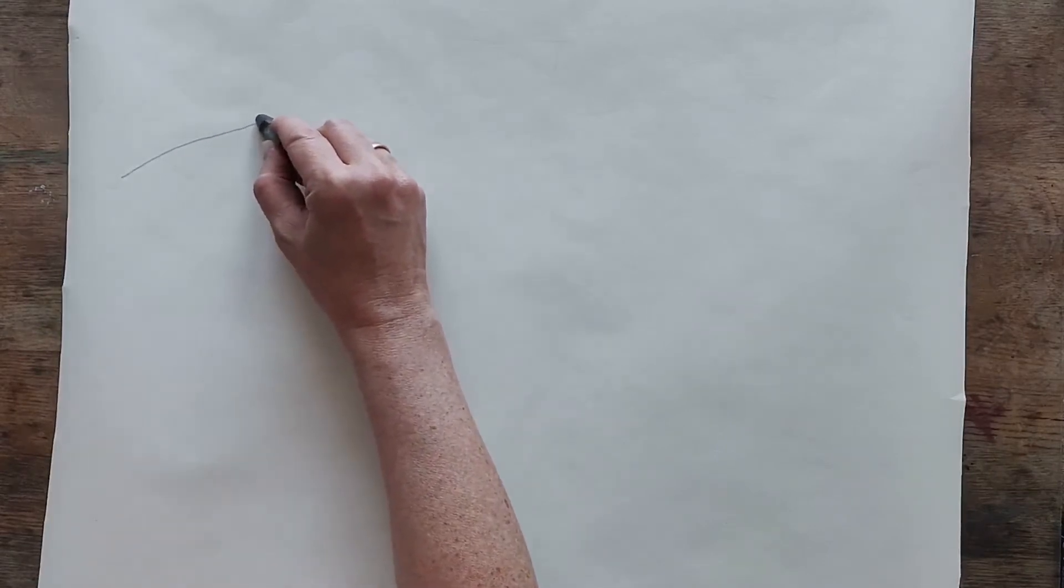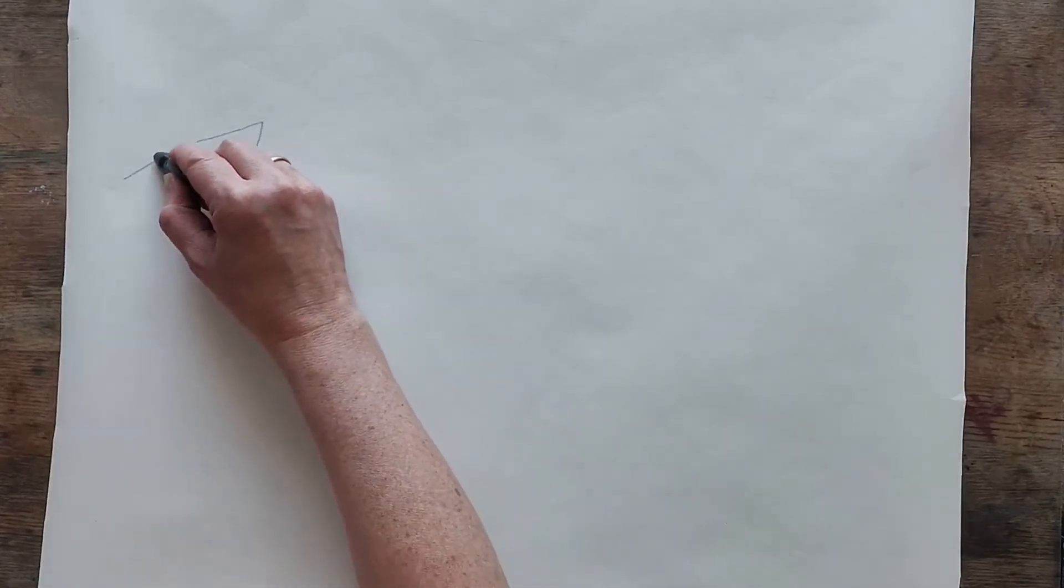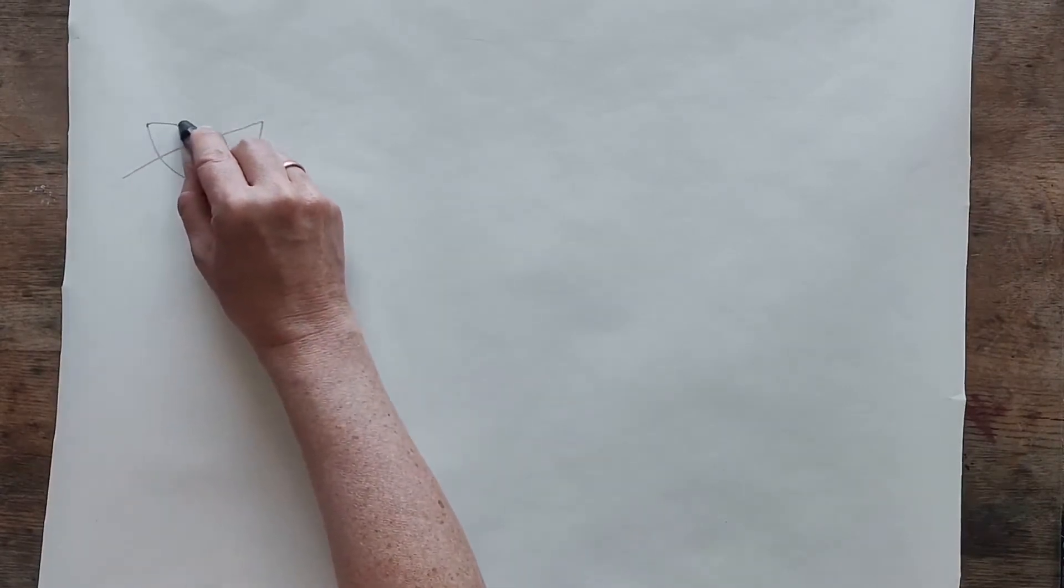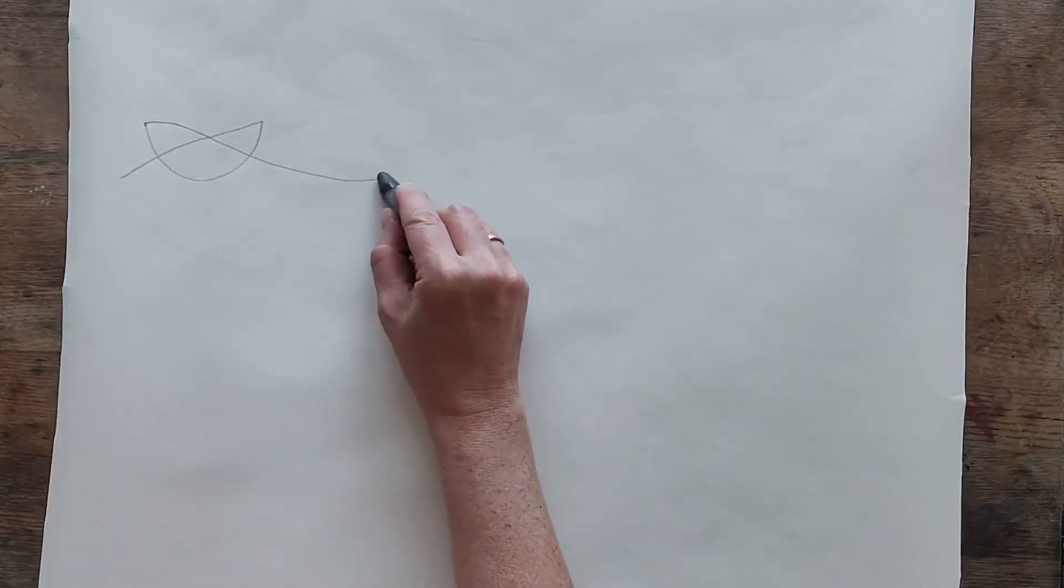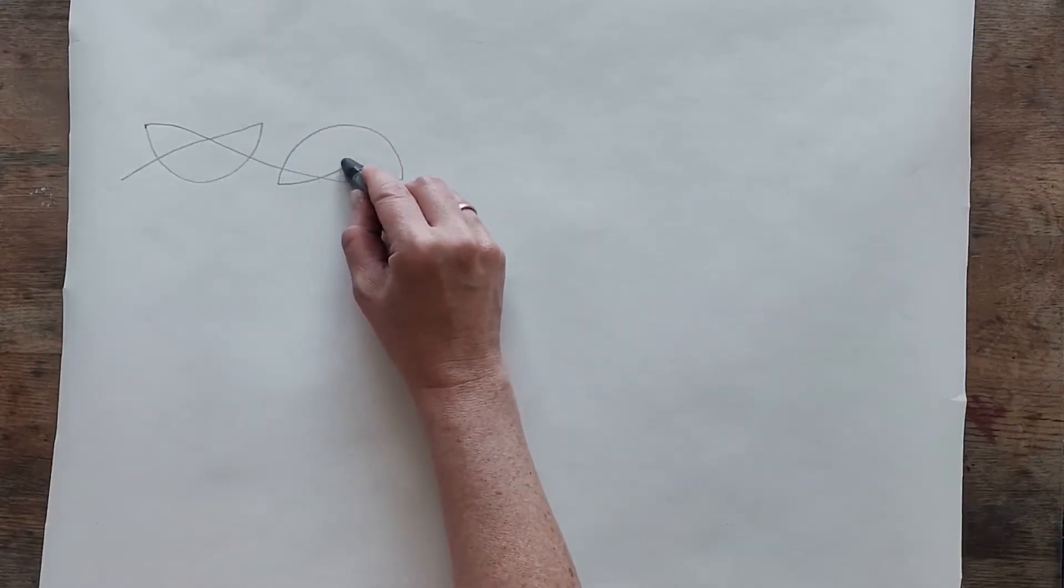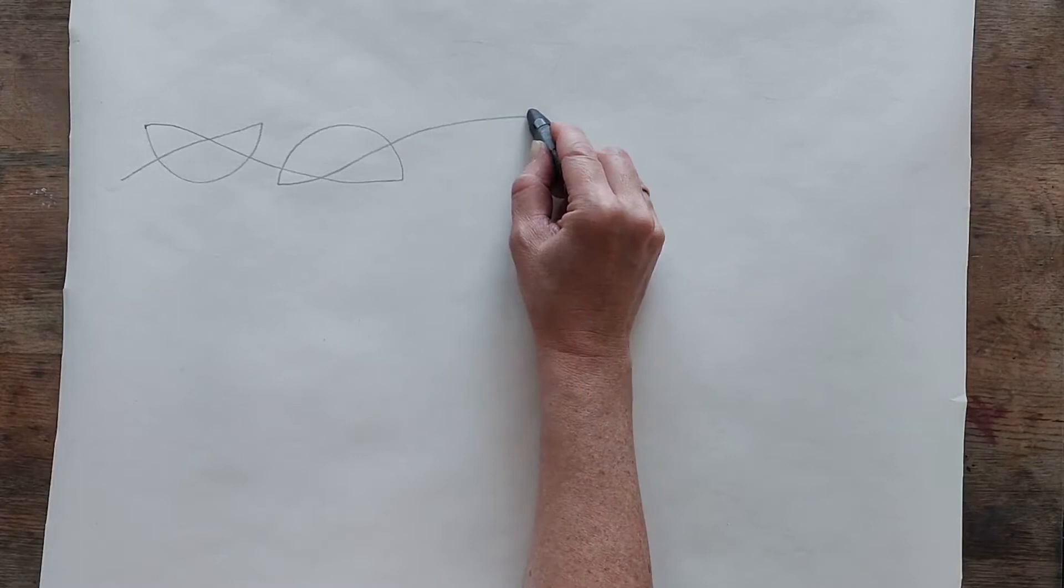Now we start off by drawing a knot that's facing up the way, and then we draw a knot that's facing down the way. Then we draw a knot facing up the way.